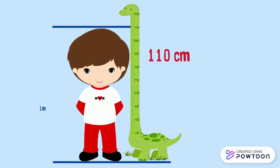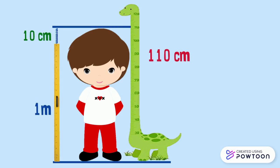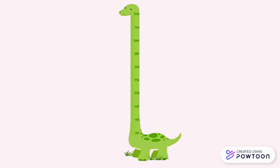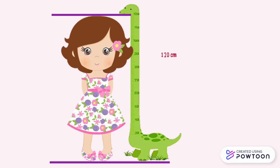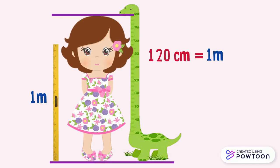That is to say, a one-meter wooden ruler with 10 pins. So, 110 centimeters equals 1 meter and 10 centimeters. The height of this girl is 120 centimeters, so we can say it is 1 meter and 20 centimeters.